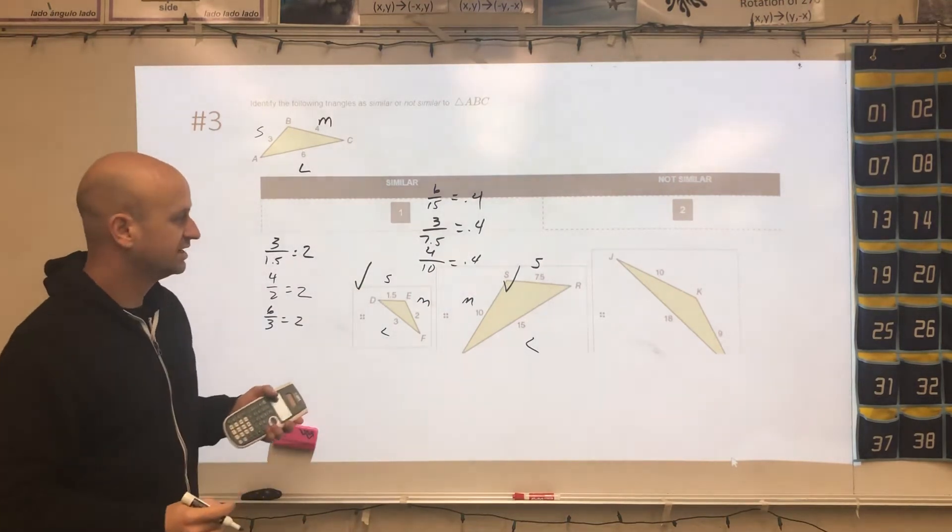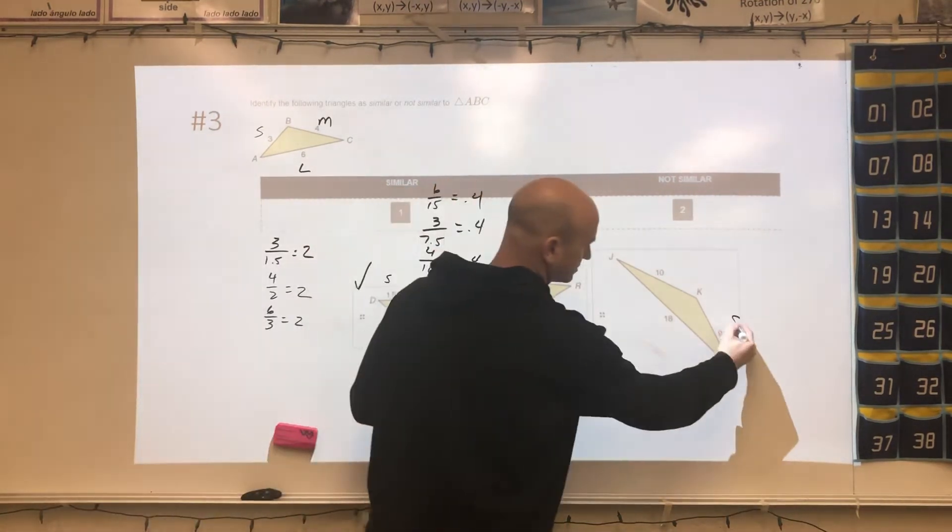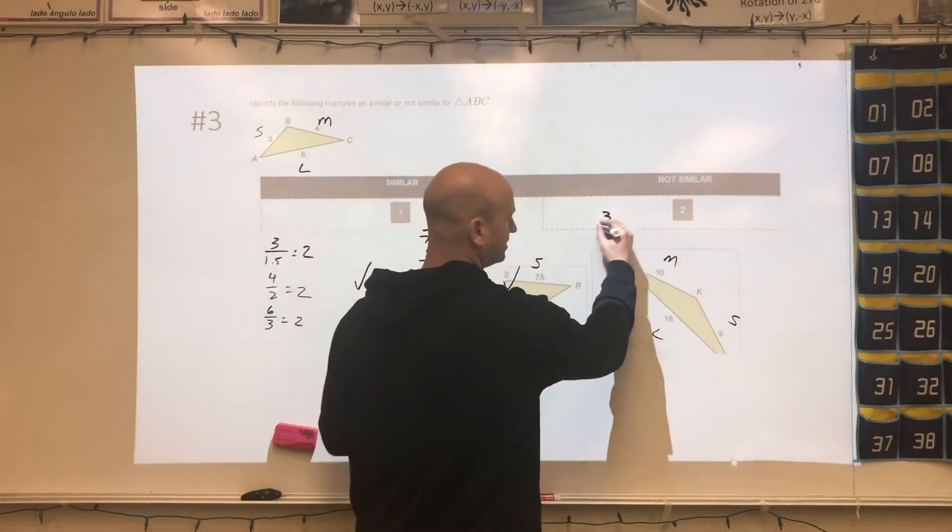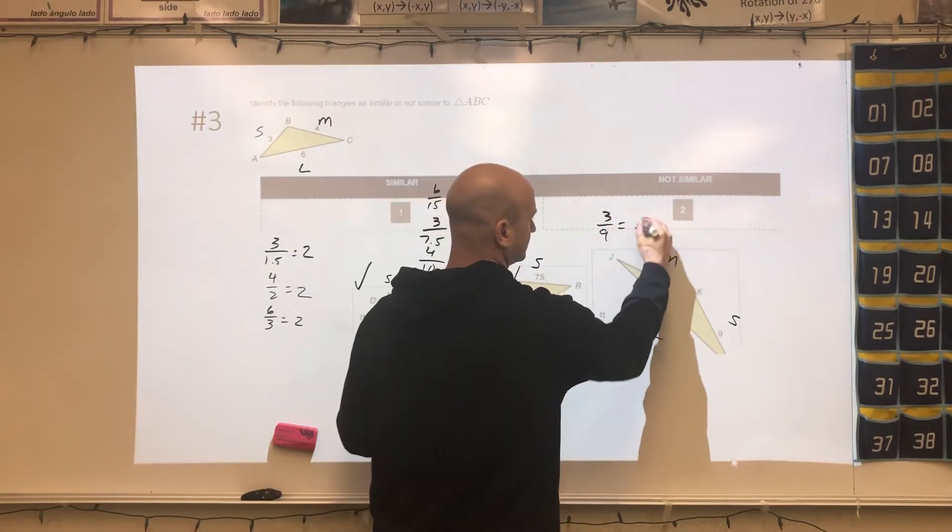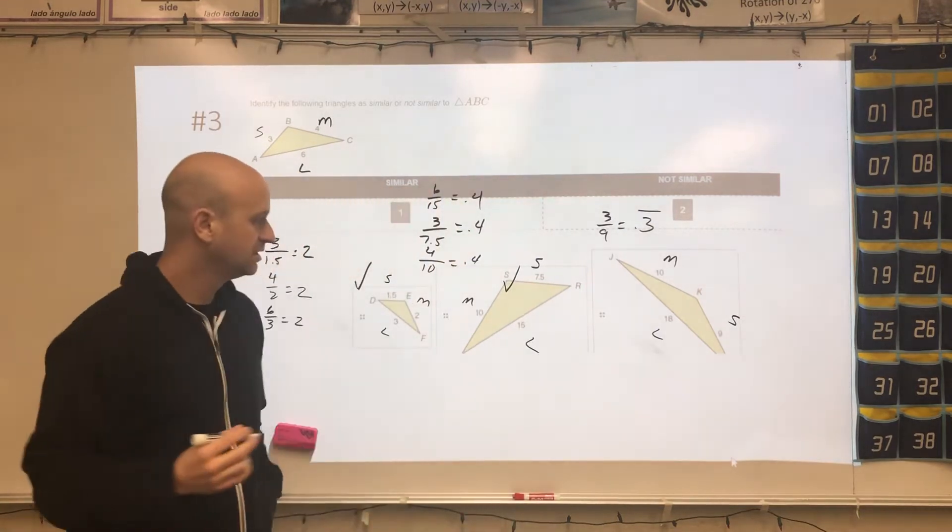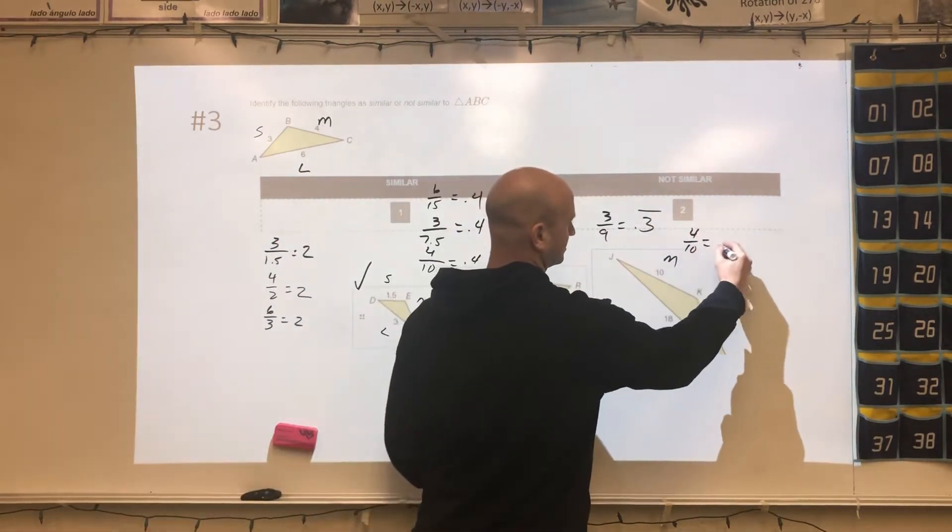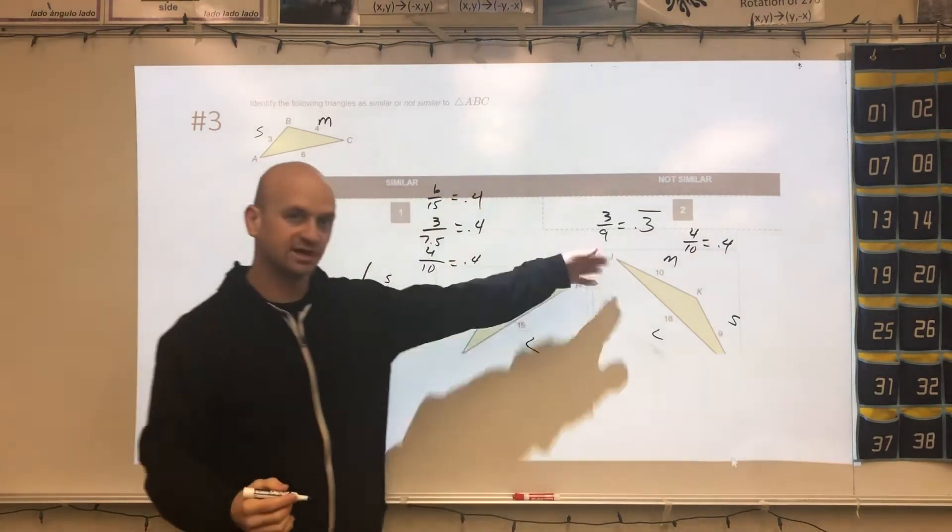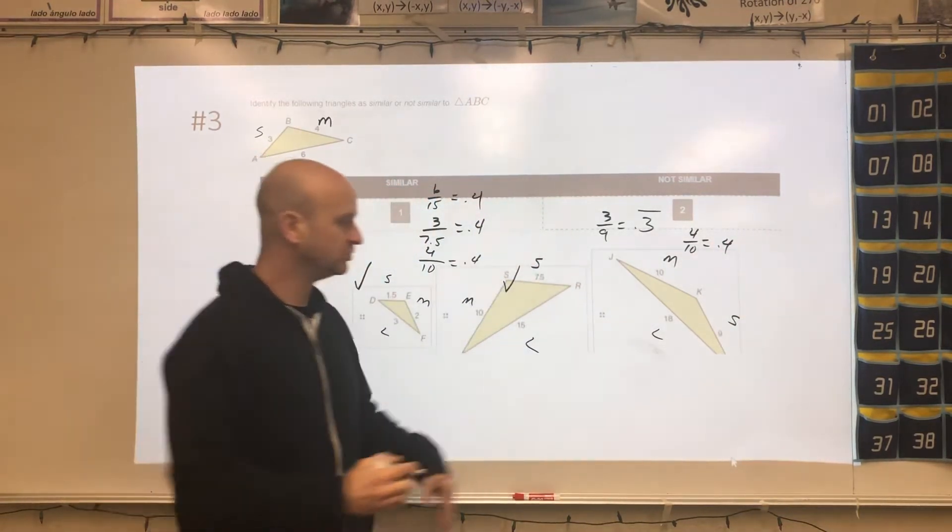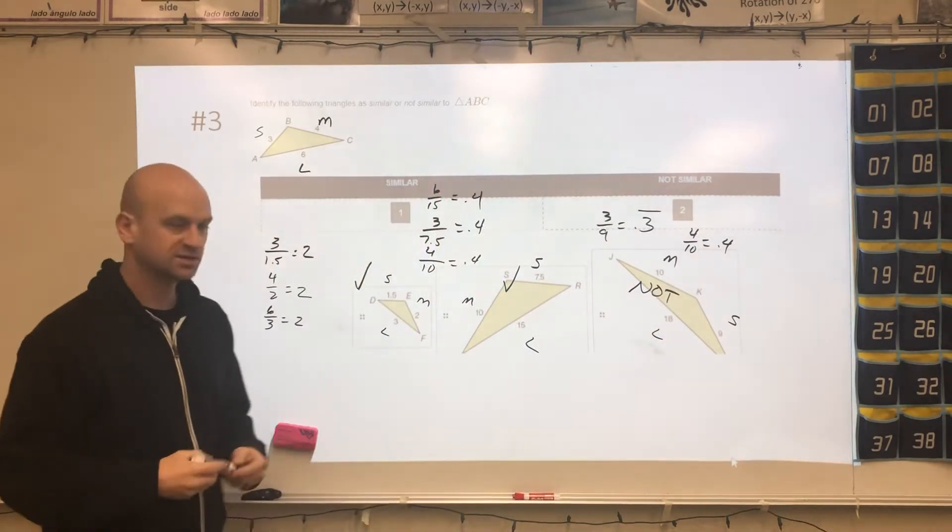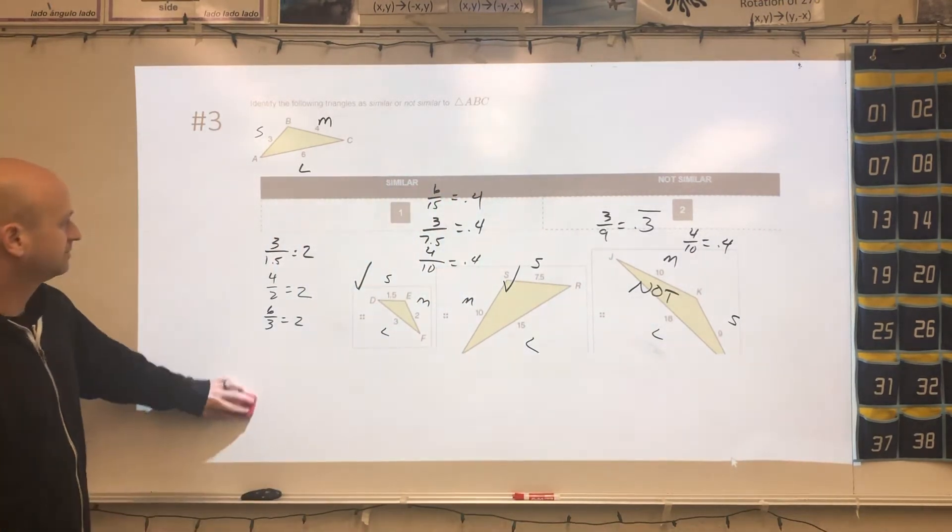All right, when we go to the last one, this would be small, medium, and large. So 3 divided by 9 is 0.3 repeating. And then the medium would be 4 divided by 10 is 0.4. And since we have two different values right now, we know that this is not going to be similar. And that's how you would do that particular problem.